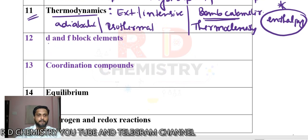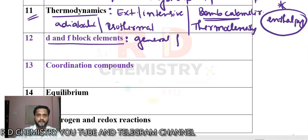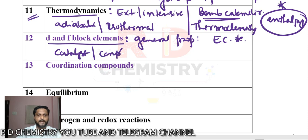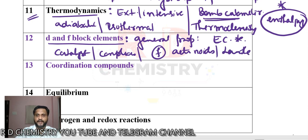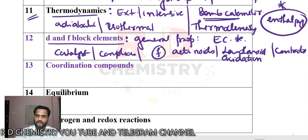Under D and F block elements, study general properties like electronic configuration and exceptional cases. D-block elements act as good catalysts, can form complexes, and show variable oxidation states. Under F-block, we have actinoids and lanthanoids — study lanthanoid and actinoid contraction, and importantly their oxidation states.